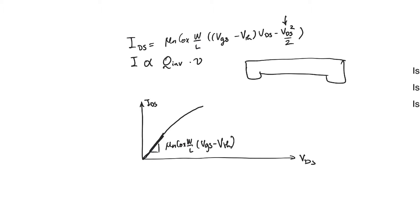The nonlinearity is obviously introduced by the minus V_DS squared over 2 term. We have to understand where this nonlinearity comes from. Nonlinearity in the current expression indicates that there are two factors affecting current: one is trying to increase the value of current, and one is trying to pull back on the value of current.